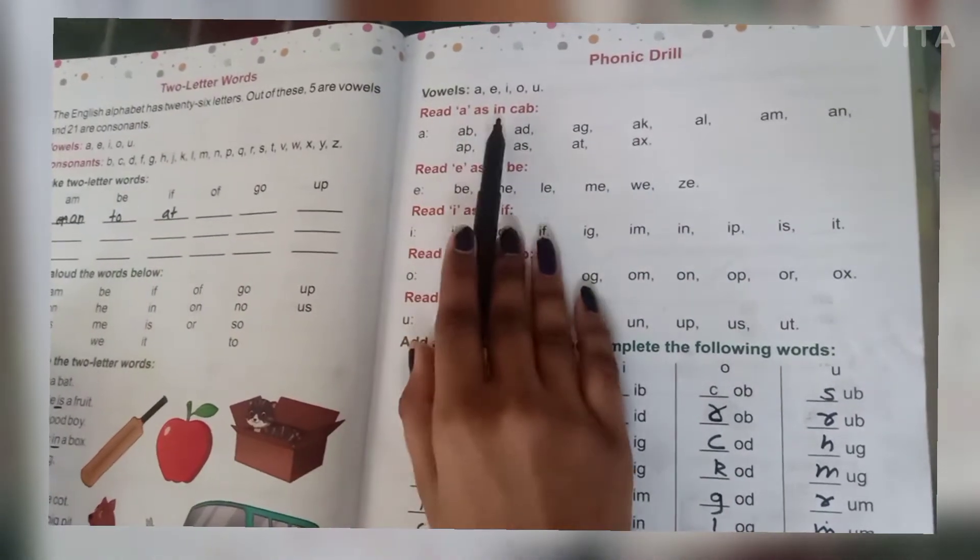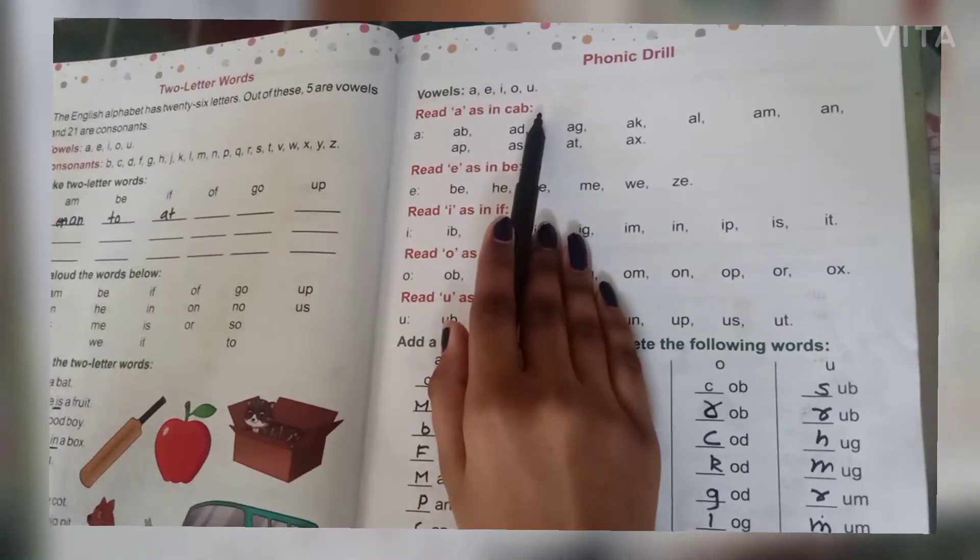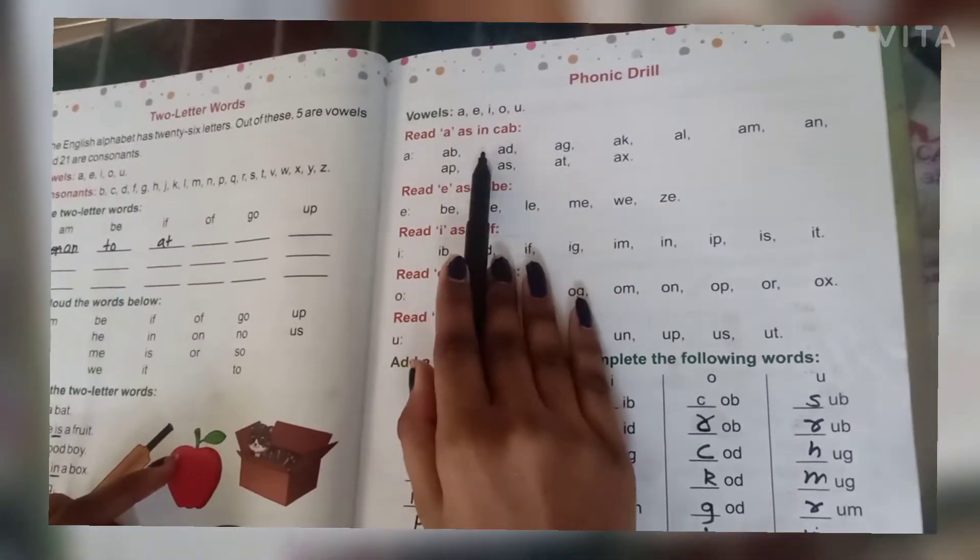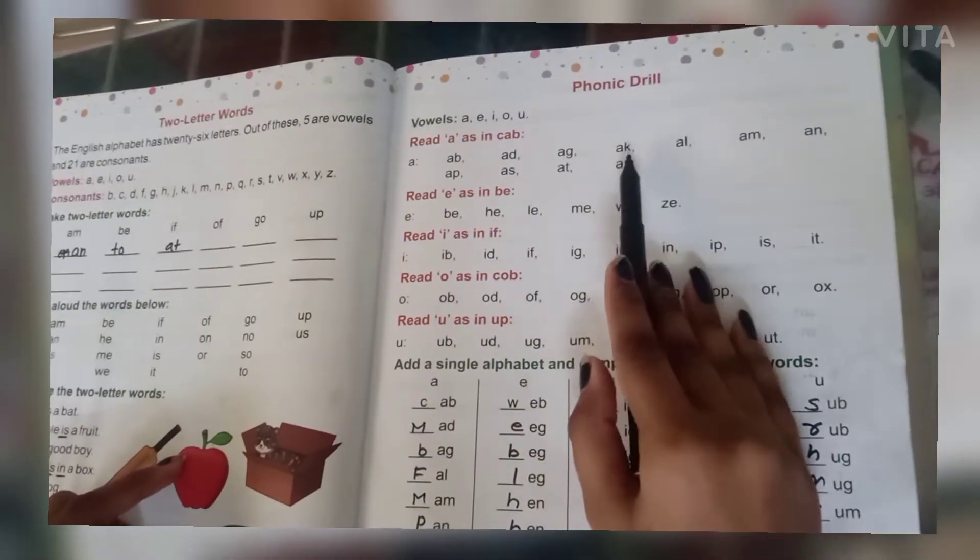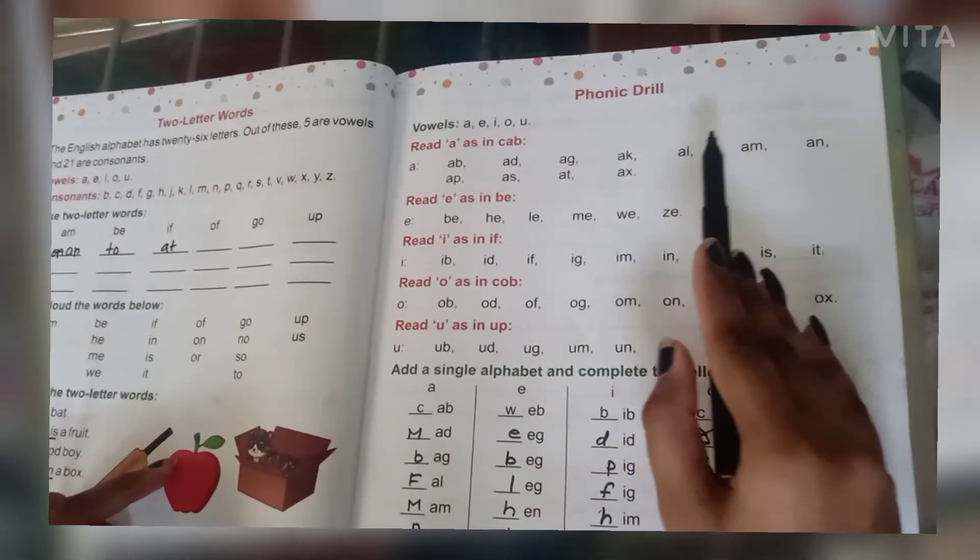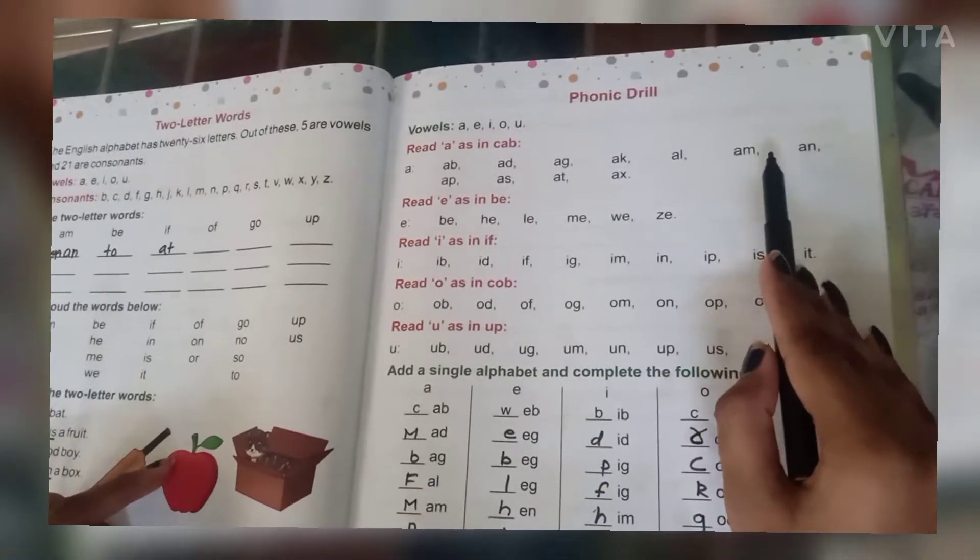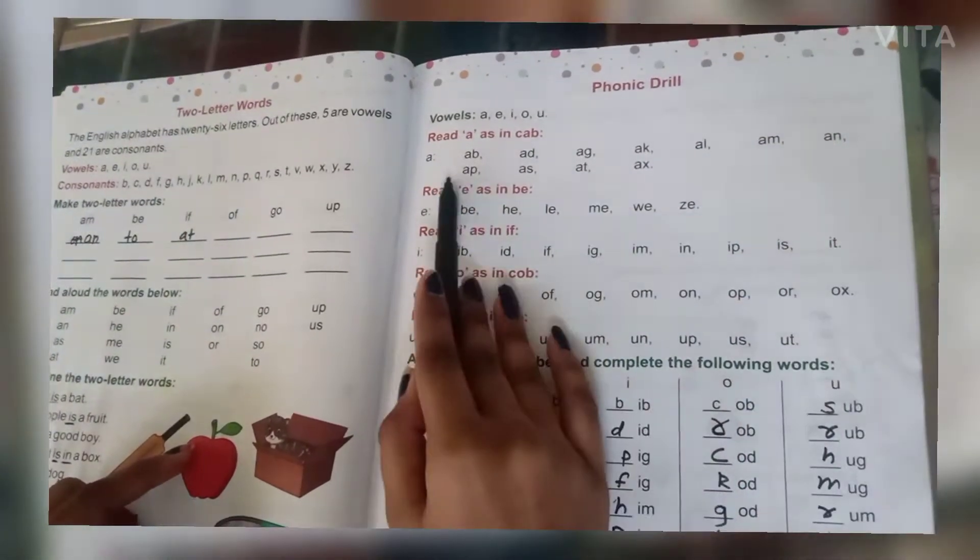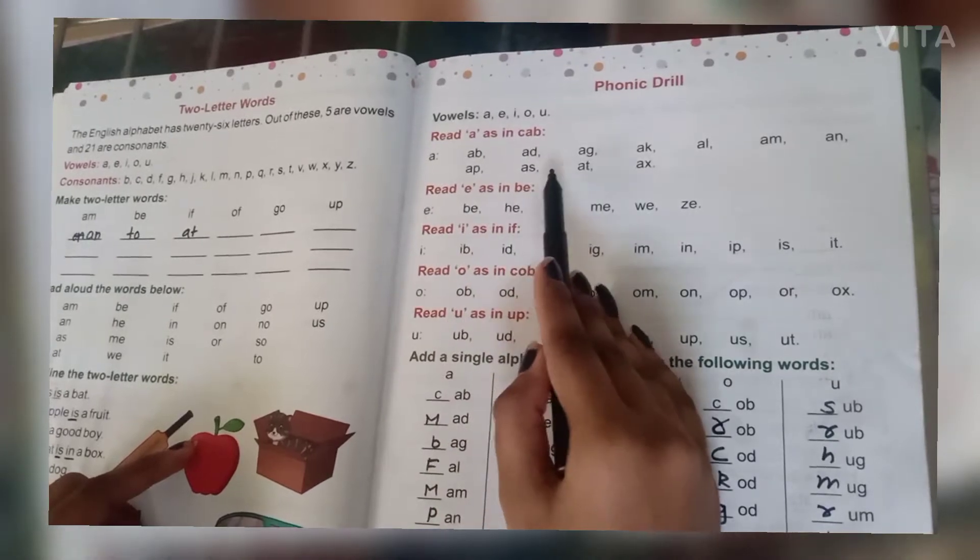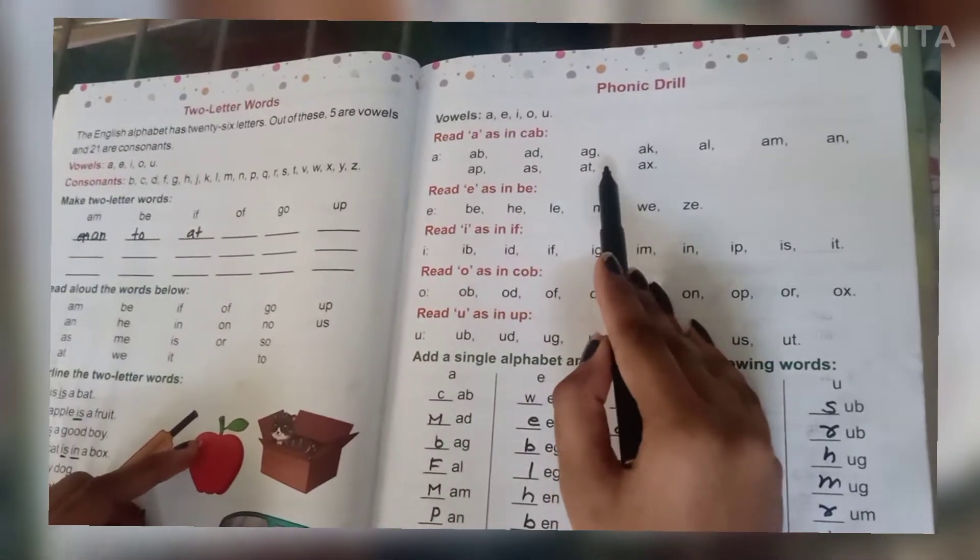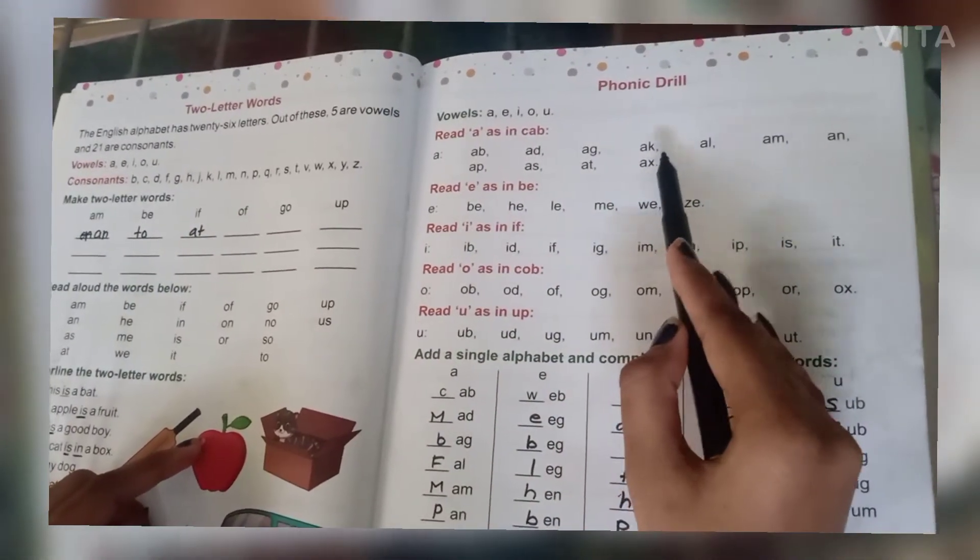Read A as in can. So you have to read A as in can, means an. So A-B, ab. A-D, ad. A-G, ag. A-K, ak. A-L, al. A-M, am. A-N, an. A-P, ap. A-S, as. A-T, at. A-X, ax.